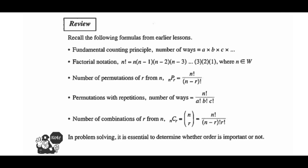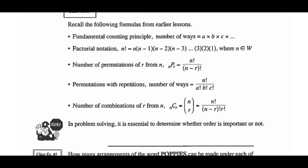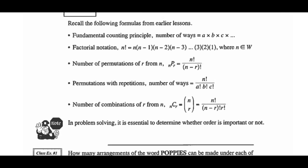Recall the following formulas from earlier lessons. The Fundamental Counting Principle states the number of ways to select is the number of ways to select option A, multiplied by the number of ways to select option B, multiplied by the number of ways to select option C, and so on.